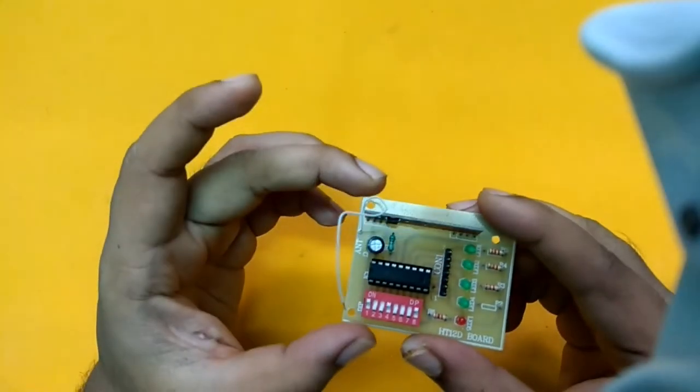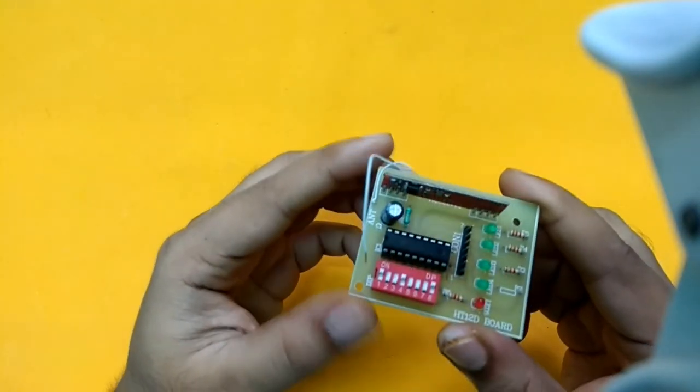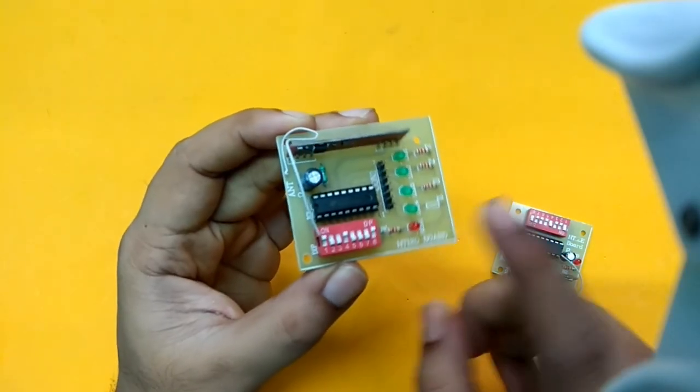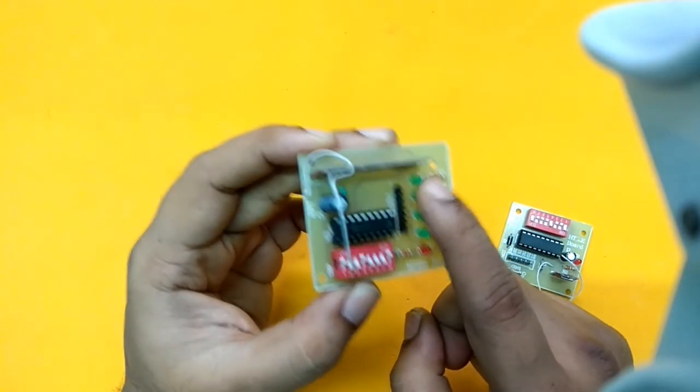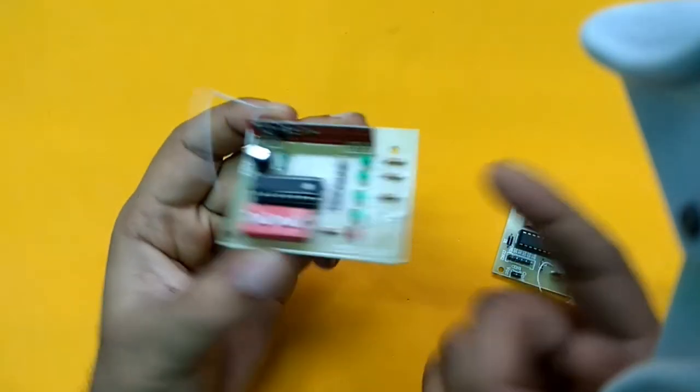On the other hand, we've got the RF receiver board which has HD12D at its core, 4 LEDs to indicate the reception of data at the output. The RF receiver goes here.